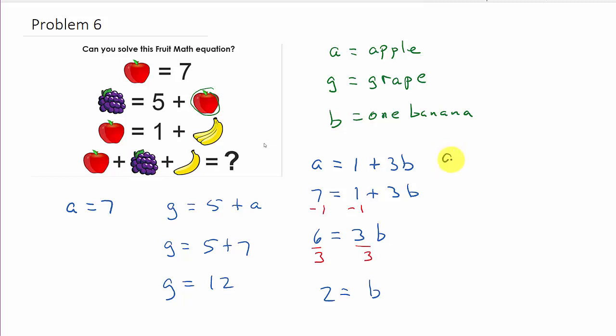let's do it in this color. We've got A, which is the apple, plus G, which is the grapes, plus B, which is a banana. And they want to know how much does that equal. All right,